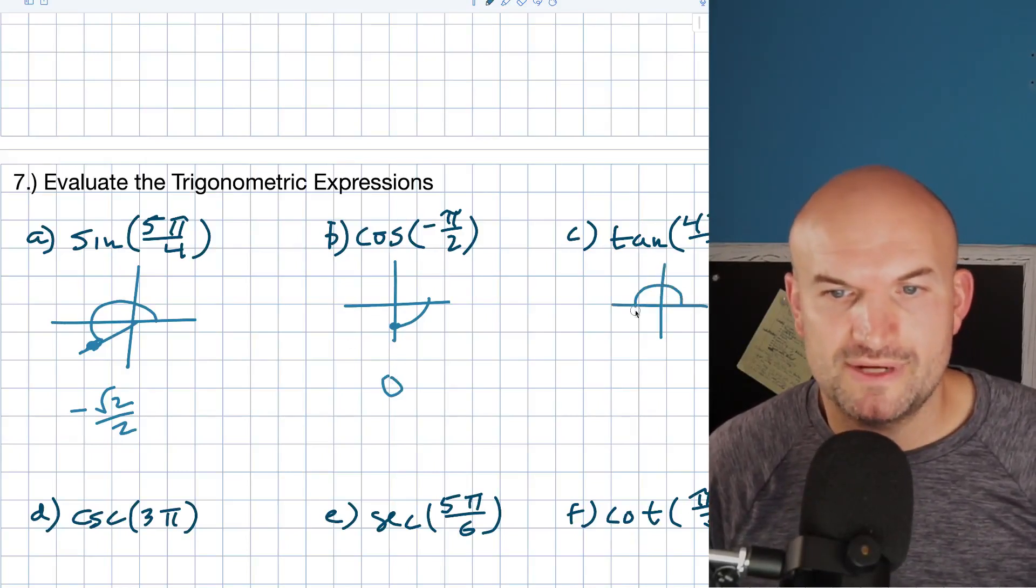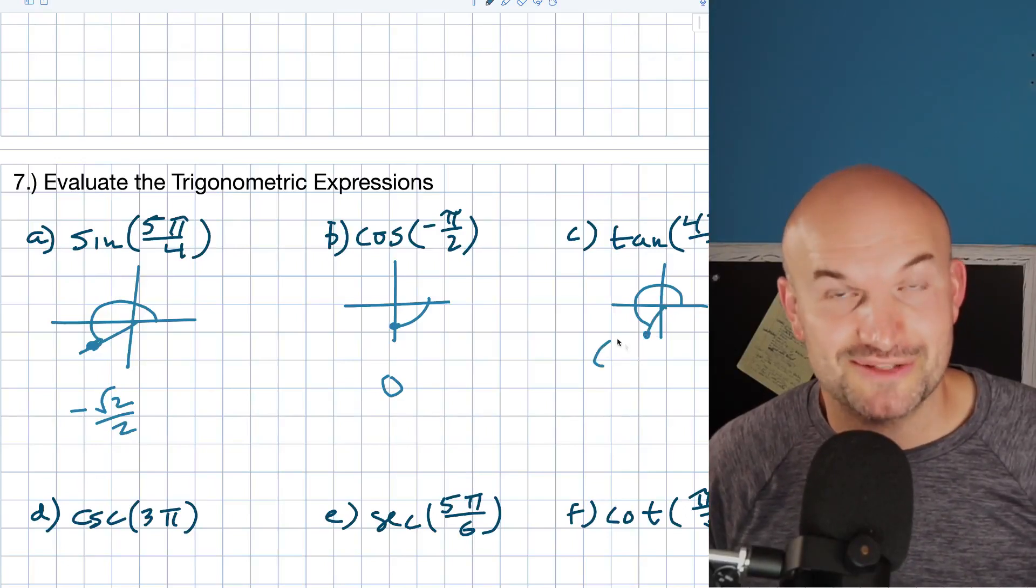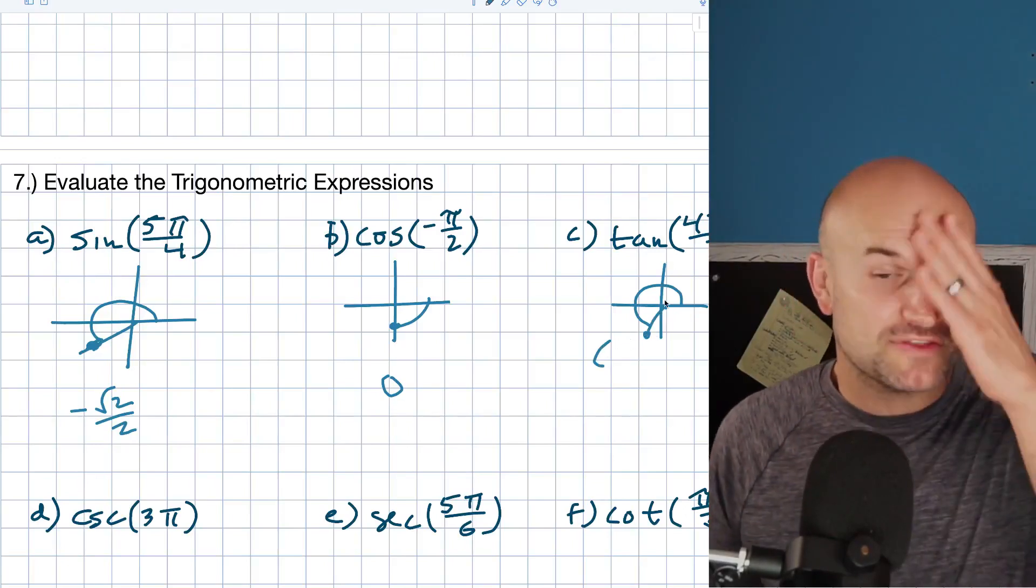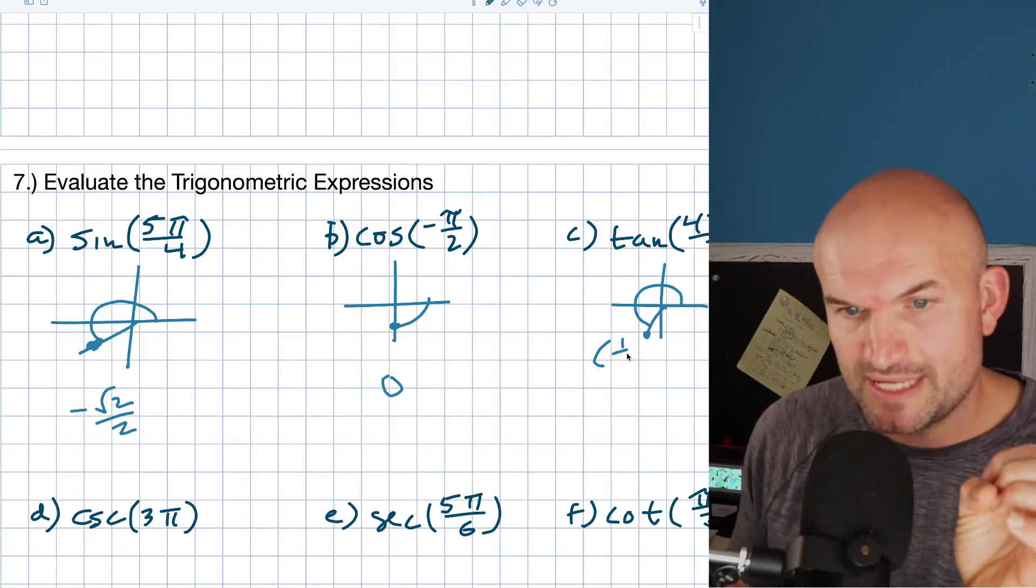4π over 3. So, 4π over 3 is down all the way down here. Now, this one, sometimes for tangent, I do like to write the x and y. So, π over 3 has the reference angle of π over 3. That's going to be a 1 half comma a square root of 3 over 2.